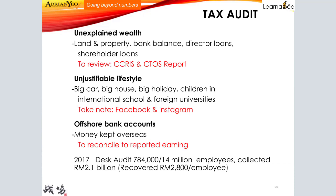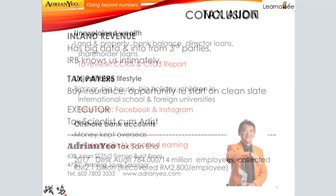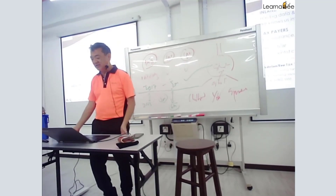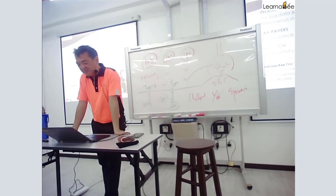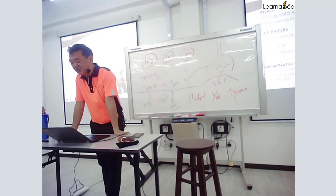...when you claim the overseas children at four thousand, there is a side effect. If I were an income tax officer, I would pull out all those people who claim the four thousand and look at them closely. So taxpayers should consider this.